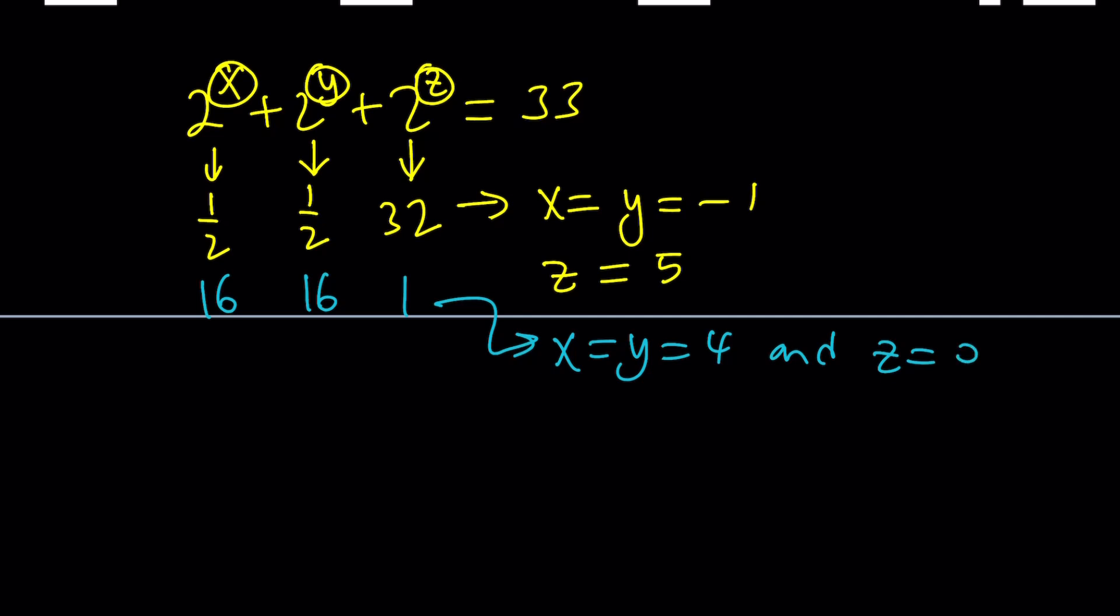In other words, this gives us x = y = 4, and z = 0. Obviously, x, y, z can switch around, so that's going to give us more permutations. But we're going to look at it as a set, because we have symmetry.